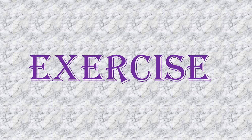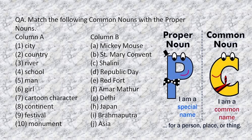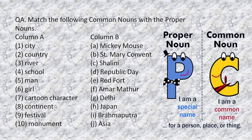Now we have an exercise for you. Always remember what we have just learned — all about common nouns and proper nouns. This will be great fun. You have to match the following common nouns with the proper nouns. Proper noun is a special name, common noun is a common name. In Column A, ten common nouns are given: city, country, river, school, man, girl, cartoon character, continent, festival, monument.